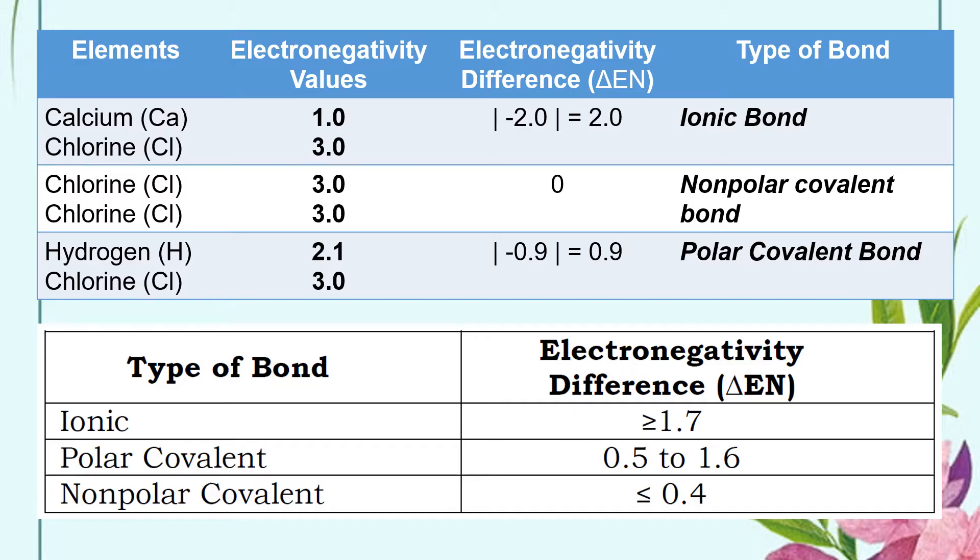The type of bond with 2.0 electronegativity difference will fall under ionic bond. Correct. In chlorine and chlorine case, they have the same electronegativity value of 3.0. The difference obviously is 0. Therefore, it is a non-polar covalent bond. For hydrogen and chlorine, 2.1 and 3.0 electronegativity values, 2.1 minus 3.0 will yield negative 0.9. And the absolute value of that number is 0.9. Using the table again as a reference, 0.9 electronegativity difference will mean polar covalent bond.